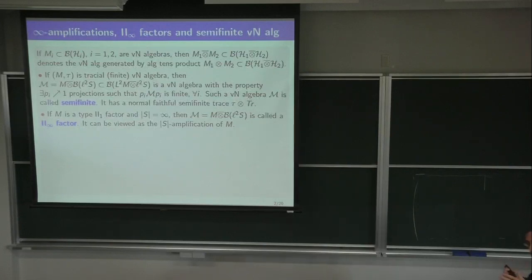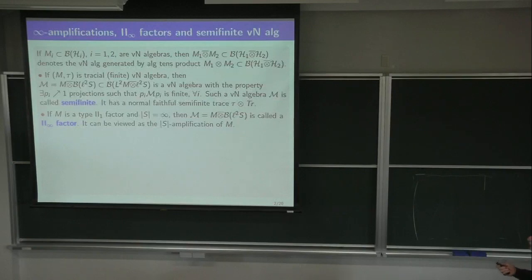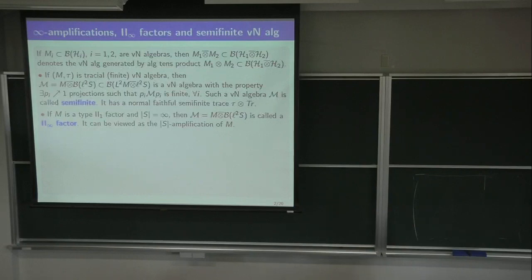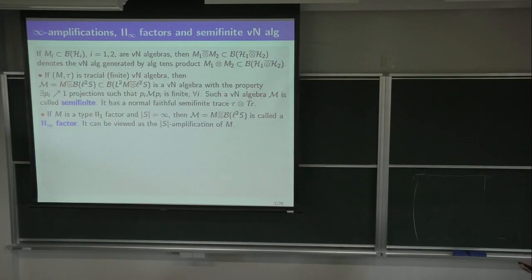It will be a function from projections to [0, ∞], including infinity. You can define it everywhere except that it will be equal to infinity for certain projections — for instance, for the identity. But what's interesting is that it's semi-finite: it has sufficiently many projections and positive elements on which it is finite. Normality is complete additivity for projections, allowing infinity. Like the measure on the real line, you may have sets of measure infinity, but it's still completely additive.